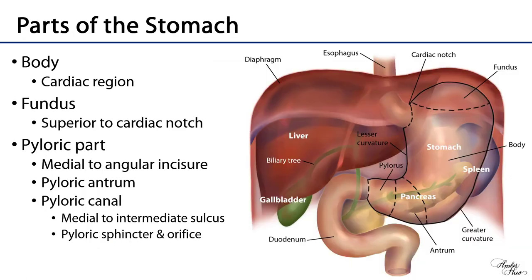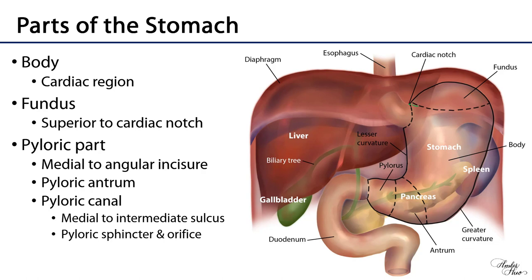The stomach has three major parts. There is the body of the stomach. The body runs from a horizontal plane that starts at the cardiac notch and extends to the greater curvature, down to another plane that begins at the angular incisure of the stomach. The region of the body adjacent to the cardiac orifice is called the cardiac region. Superior to the body is the fundus, which is everything above that plane from the cardiac notch to the greater curvature.